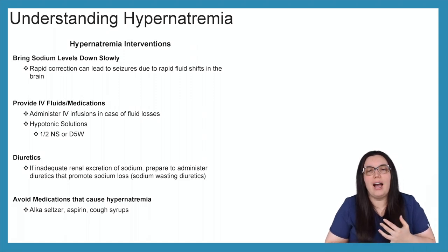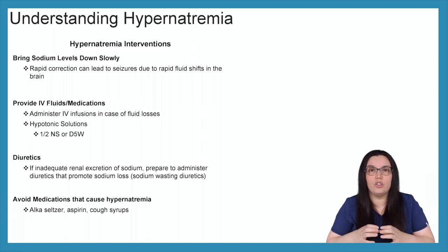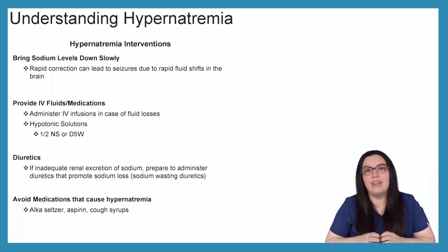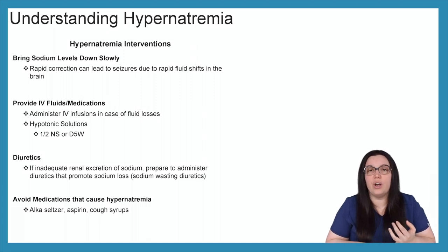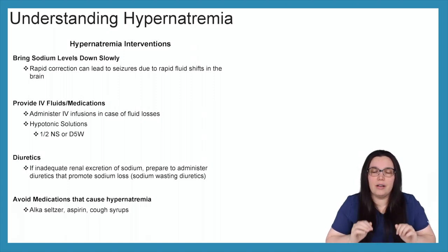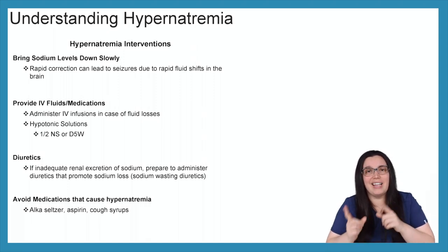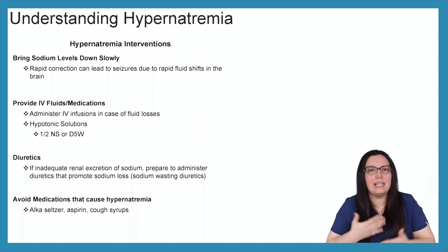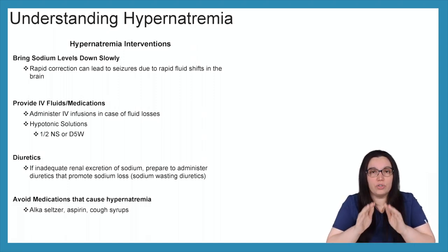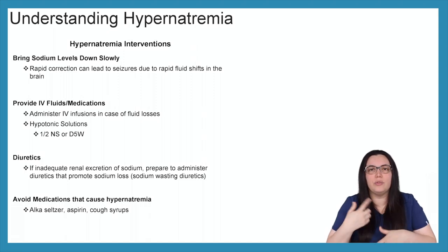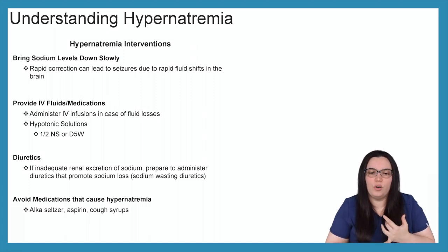We also want to provide IV fluids and medications. We administer IV fluids in the case of fluid losses — if we have a hypovolemic patient, we want to replace those losses. We can also give hypotonic solutions, which move sodium into the cells. Where salt goes, fluid goes — it shifts inside the cells, ultimately helping correct high serum sodium levels. We can give half normal saline or D5W depending on what's going on with our patients.